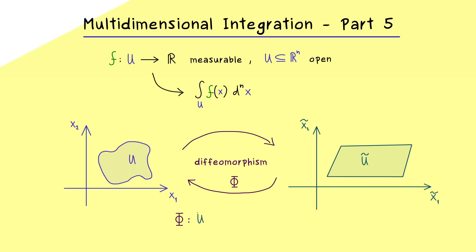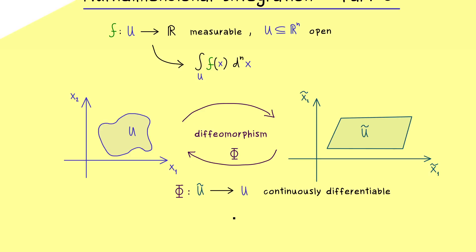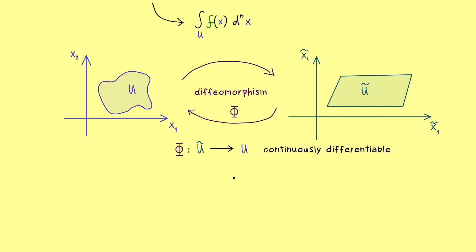Hence phi maps U tilde into U. So please note we have an n-dimensional input and an n-dimensional output. And we want that the map is continuously differentiable. And now to make this into a diffeomorphism, we need that the inverse exists, so we need a bijective map. And then this inverse should also be continuously differentiable. Hence phi inverse is now a map from U into U tilde. More precisely, what we have here is what we call a C^1 diffeomorphism. If you want to know more about diffeomorphisms, I discuss them in my multivariable calculus series in part 21.